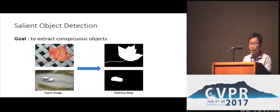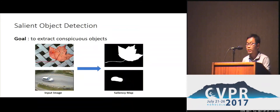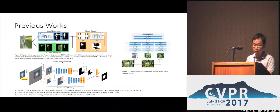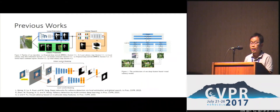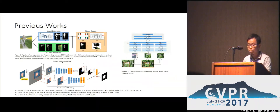Salient object detection aims to extract the conspicuous objects from an image, such as the leaf on the top and the car at the bottom in the traffic scenes. Most recent deep learning-based methods were patch-based or super-pixel-based, and then used multi-scale and region proposal to model the context information.